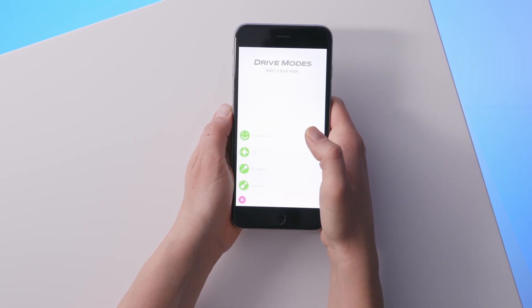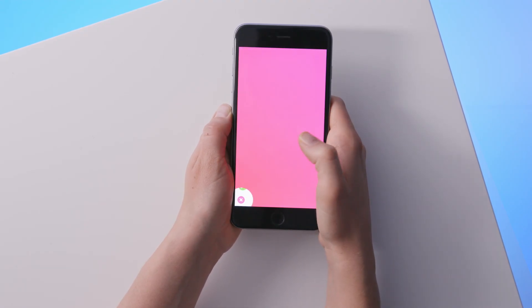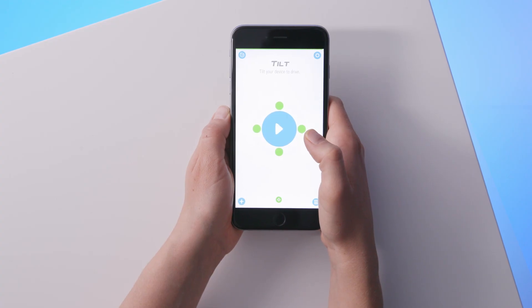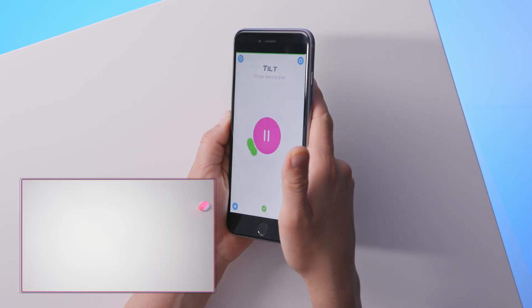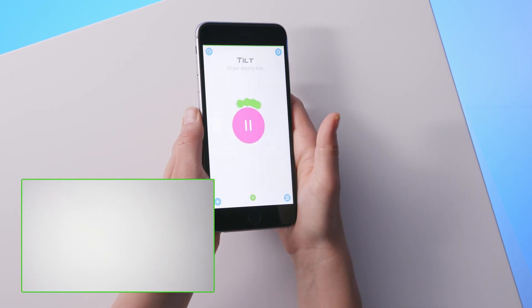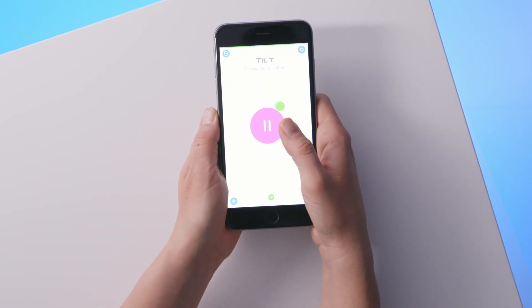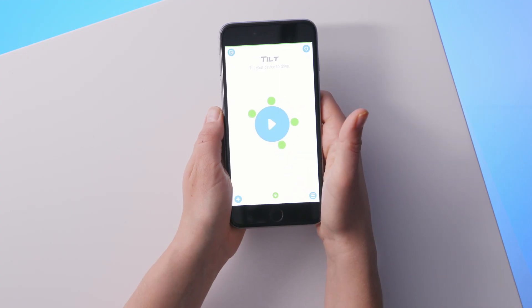Tilt drive works exactly how it sounds. Tap the play button to start driving, then just tilt your phone up and down to go forward and back, or tilt to each side to send your mini in that direction. The more you tilt your phone, the faster mini will go in that direction. You can pause tilt drive by tapping the pause button.